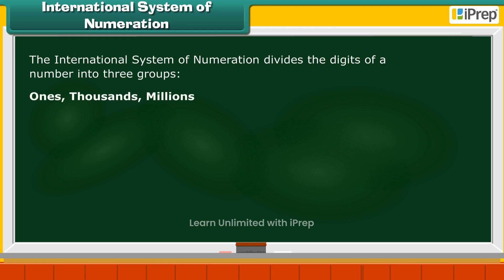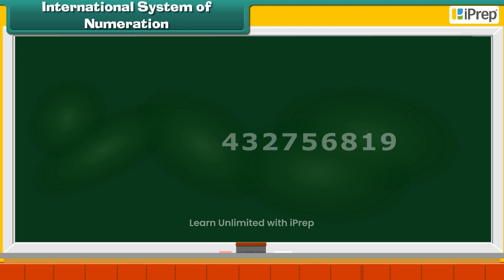Thousands and Millions. Let us see how. Consider the number 432756819. We count three digits from the right and place a comma before 8. Then we count three more digits and place a comma before 7.